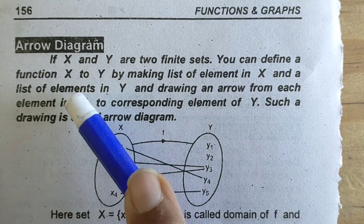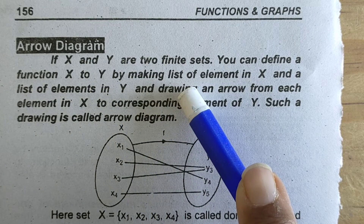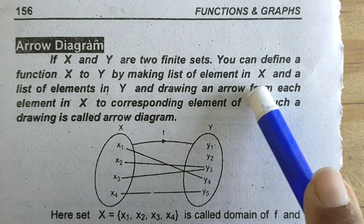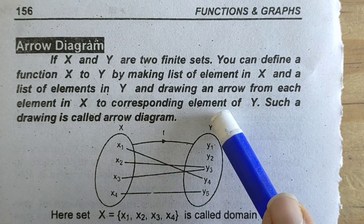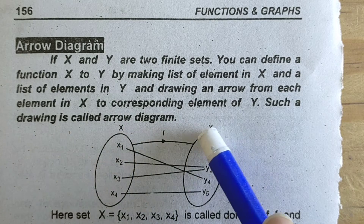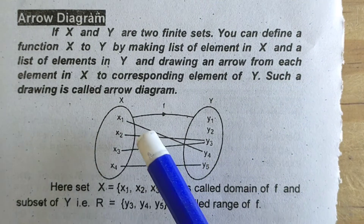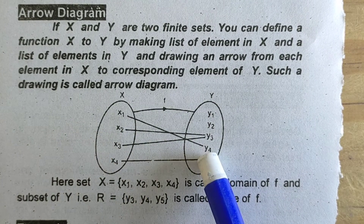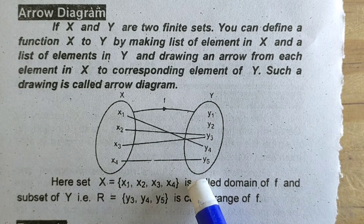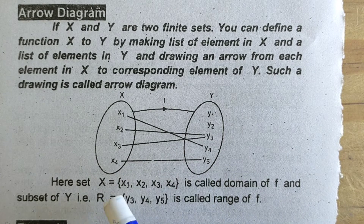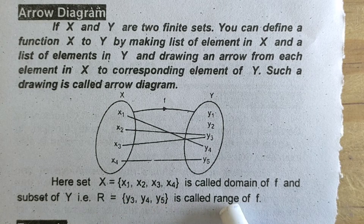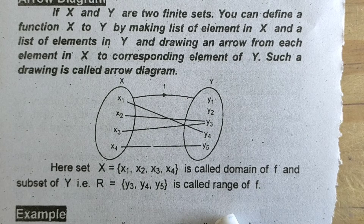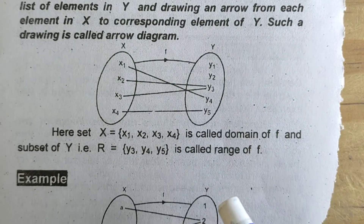The arrow diagram: If X and Y are two finite sets, you can define a function from X to Y by making a list of elements in X and a list of elements in Y, and drawing an arrow from each element in X to the corresponding element in Y. Such a diagram is called an arrow diagram. For example, X1 relates to Y4, X2 to Y3, X3 to Y3, and X4 to Y5. So set X = {X1, X2, X3, X4} is called the domain of F, and the subset of Y used — {Y3, Y4, Y5} — is called the range of the function.